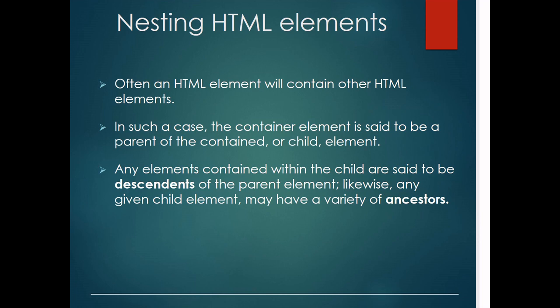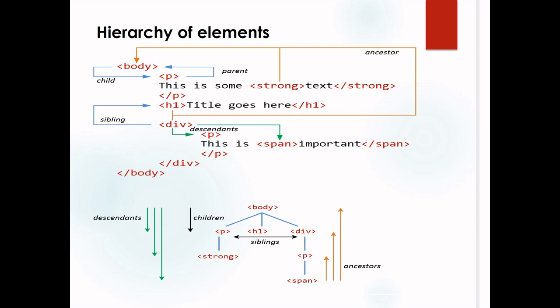Another important point for HTML elements is nesting. Nesting means that inside a parent element you can write a child element, and inside a child you can write sibling elements. Any element contained within another is a descendant of the parent. In the hierarchy example, any content you want to display is placed inside the body tag — the body has an opening and a closing tag.